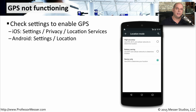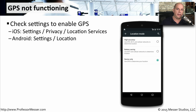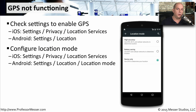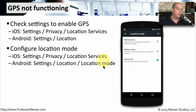We rely on the GPS and location features of our mobile devices not just for maps, but also to tell us what's around us or how long it might take to get home. If GPS capabilities are not working as expected, make sure they are turned on. On iOS, it's under Settings, Privacy, and Location Services. On Android, it's under Settings and Location. There is also a location mode that may use other methods besides GPS to determine your location — check that in iOS under Settings, Privacy, and Location Services, or in Android under Settings, Location, and Location Mode.